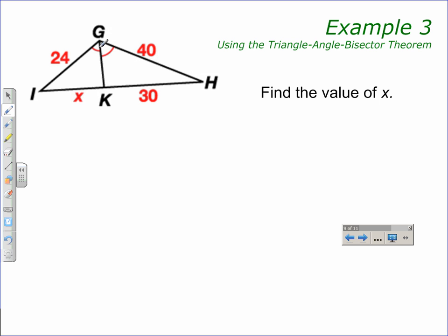For this diagram, this big angle IGH is bisected by GK. We know that because they are marked congruent. That means this side, IGH, is going to be proportional to the other two sides of the triangle.